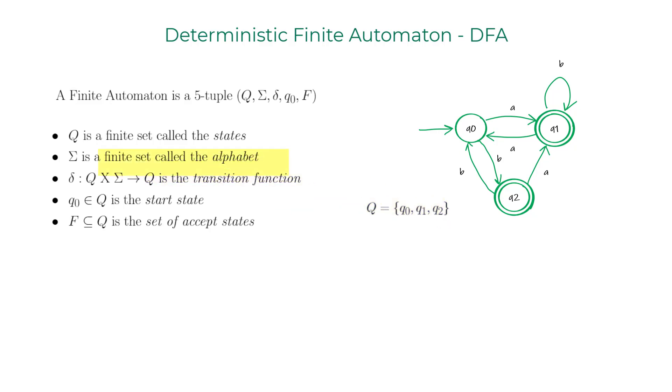Moving on to Sigma. Sigma is the finite set called the alphabet. For this DFA we clearly see that every state has a transition for A as well as B. A and B are the characters that we use in this DFA, so the alphabet Sigma for this DFA is A comma B.